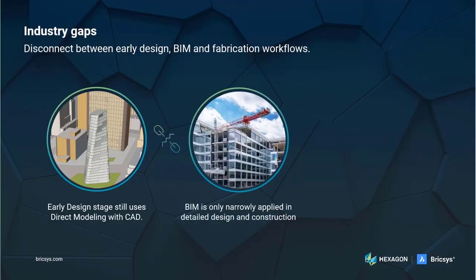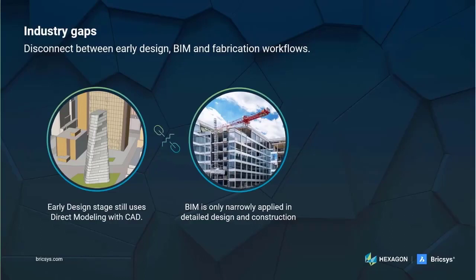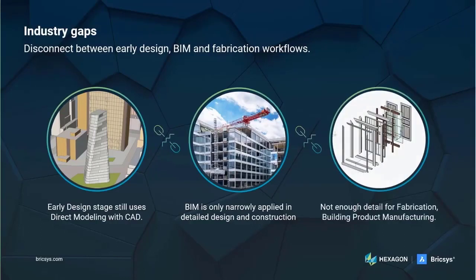BIM is most used in detailed design and some parts of construction. When the project reaches this stage, the design geometry cannot be directly converted to BIM elements, so everything must be remodeled in a BIM software. This creates a disconnect between the world of early design and BIM. BIM is then used all through detailed design and construction documentation, and the project is usually remodeled for construction, as those firms use a different level of detail.